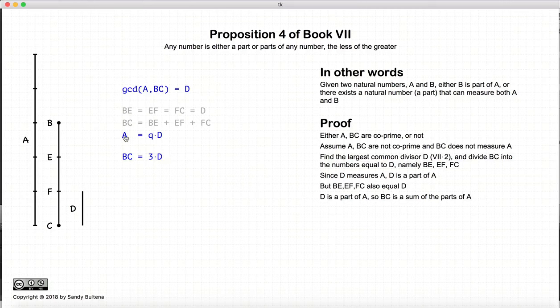There we go. So, D measures A, and D is a part of A, and BC is composed of parts of A.